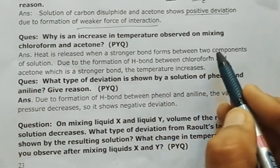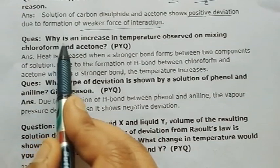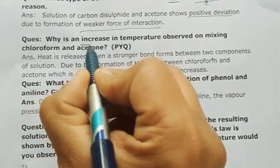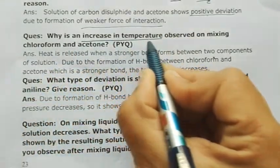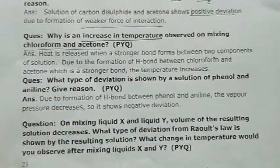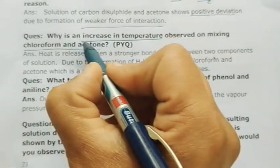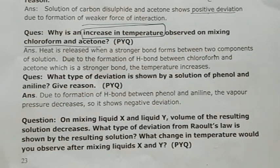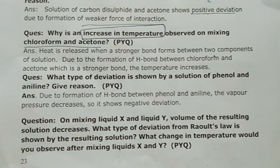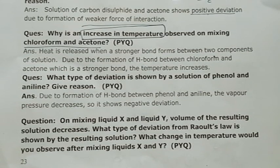Next question: why is an increase in temperature observed on mixing chloroform and acetone? The hint is already given — temperature is increasing. You may or may not know whether H-bond is present, but you can still get the correct answer. Temperature increasing means the process is exothermic.